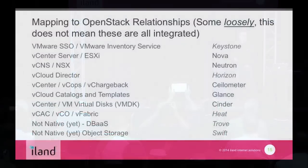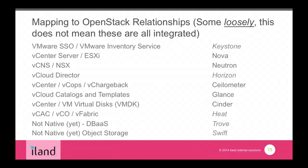Now, this slide - if anybody in the room is working at VMware, remember I wrote 'loosely,' italicized it and underlined it. Here's a disclaimer: the left-hand side is for the VMware guys, the right-hand side is for the OpenStack guys. What I'm attempting to do is, although there are not direct hooks into all these components between VMware and OpenStack, get a VMware person thinking in the OpenStack terminology. In VMware it's vEverything - it's confusing. And if you're a VMware guy and you see Nova or Neutron, it doesn't mean anything until you start reading about it. So: VMware SSO and Inventory Services loosely equates to Keystone in OpenStack; vCenter Server and ESXi map to Nova. This is a good starting point if you've never seen either environment.